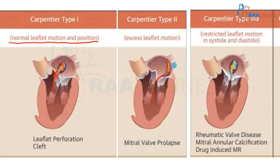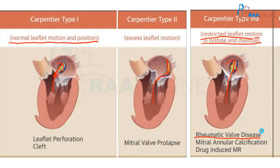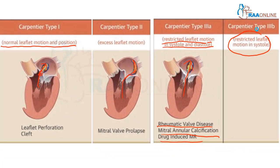In Carpentier Type 3, leaflet motion is restricted both in systole and diastole — the leaflet cannot open and close completely, producing a central jet. This is the most common type, with etiologies including rheumatic valve disease (the most common cause of mitral regurgitation), annular calcification, and drug-induced mitral regurgitation. Carpentier Type 3B refers to restricted leaflet motion only in systole.